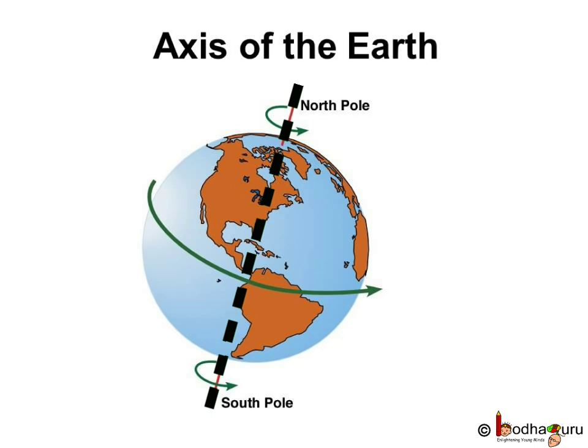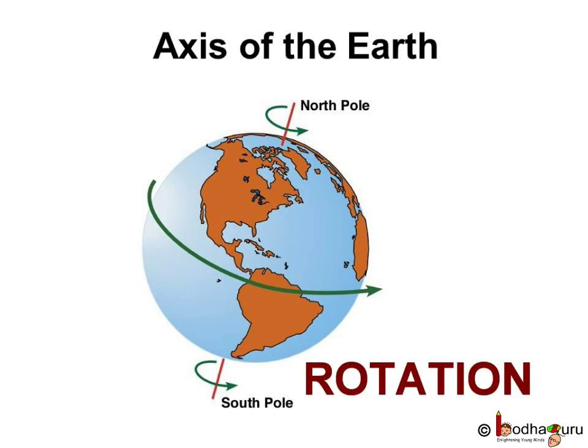The Earth moves around its axis from west to east as shown by the green arrow in this diagram. This movement of Earth around its axis is called rotation.